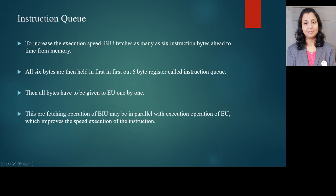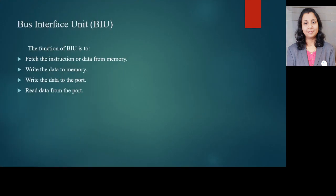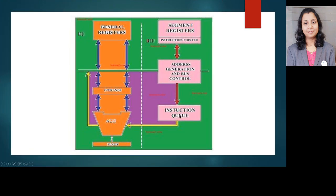To increase the execution speed, the BIU fetches as many as six instruction bytes ahead of time from memory. All six bytes are held in a first-in-first-out six-byte register called the instruction queue. These bytes are given to the execution unit one by one. This prefetching operation of the BIU may run in parallel with the execution operation of the execution unit, which improves the speed of instruction execution, saving the time of fetching and storing.